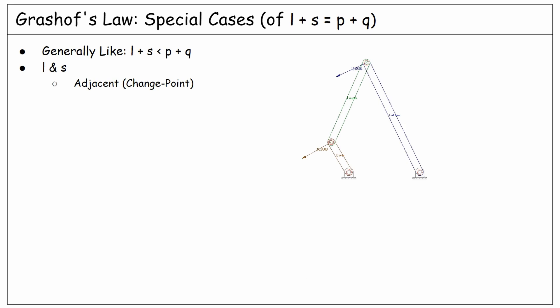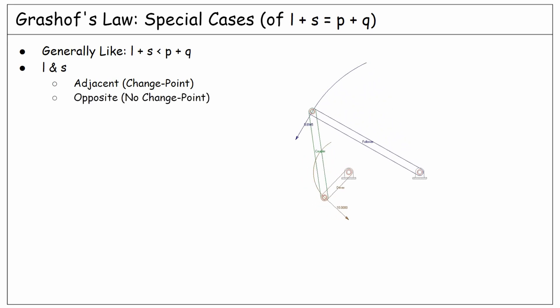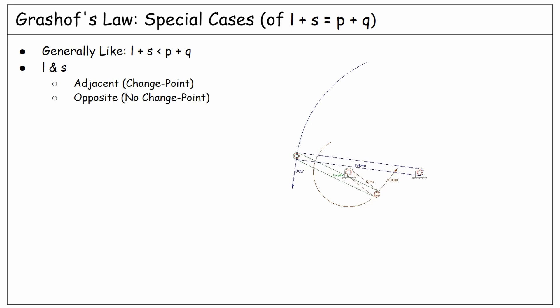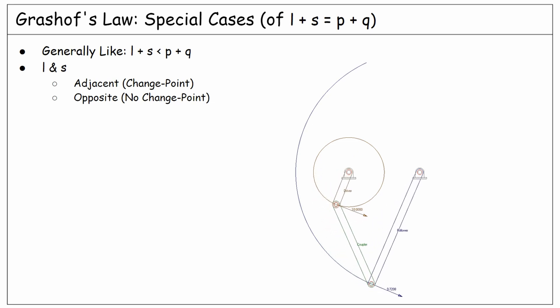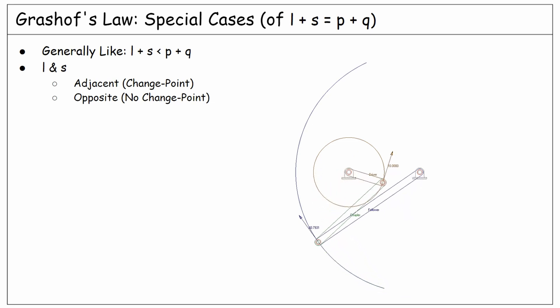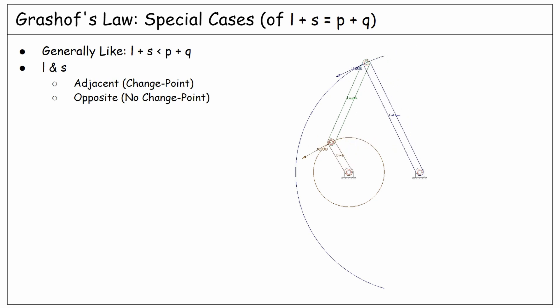If the longest and shortest links are not adjacent, the system will never change its direction, even when all the links are aligned. As you see in this example, it happens twice that the links get aligned, but neither of them is a change point.